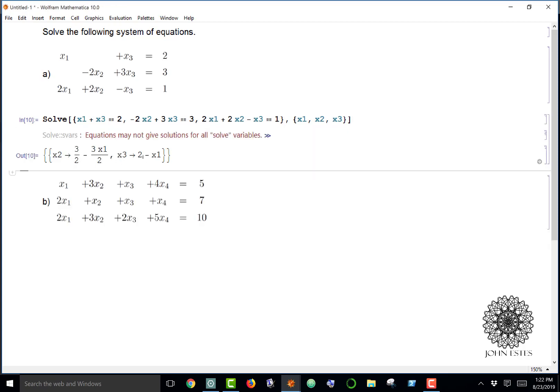Notice these are parametric solutions. Here x2 means 3/2 minus 3x1 over 2, x3 is 2 minus x1. That means x1 is free to be anything.